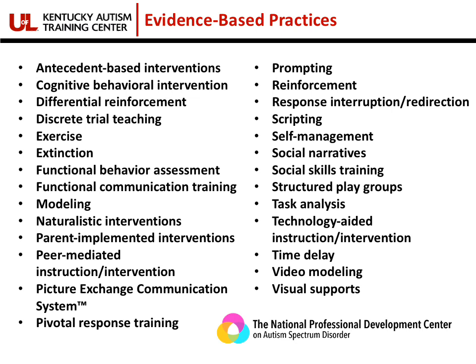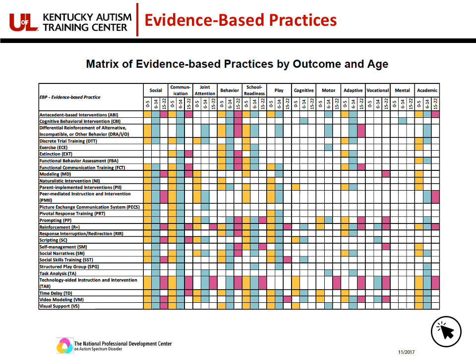I'm sure you're probably using modeling, prompting, and many others — you may just not realize it. If you've accessed the PDF version of these slides, you can click on the image to access a larger matrix that breaks down each of those 27 evidence-based practices by age range — zero to five, six to fourteen, and fifteen to twenty-two — as well as by different domains, to help narrow your search and see where to begin. Anywhere in this presentation where you see the mouse pointer icon, that indicates you can click on text or an image to open an additional resource.